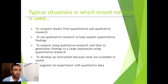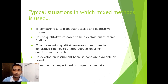These are the most common situations for why we use mixed method in research. First is to compare results from quantitative and qualitative research. Next is to use qualitative research to help explain the quantitative findings. Next is to explore using qualitative research and then to generalize findings to a large population using quantitative research. Next is to develop an instrument because none are available or useful. Next is to augment an experiment with qualitative data.